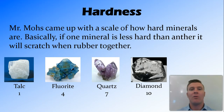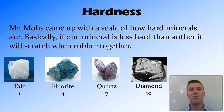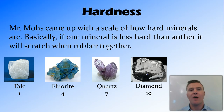Basically how it works is that a mineral with a low hardness on the scale is going to scratch when rubbed against a mineral with a high hardness. So for example, if you rubbed quartz and fluorite together, the quartz would scratch the fluorite.